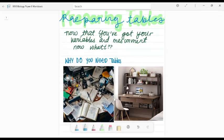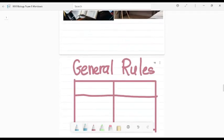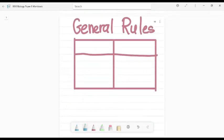What's up guys? Welcome back to another video. Today we're talking paper six skills for biology and we're going to talk about the preparing table skill. This question comes up on question one and you need to be able to know the general rules.